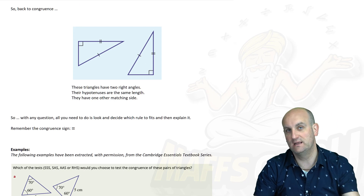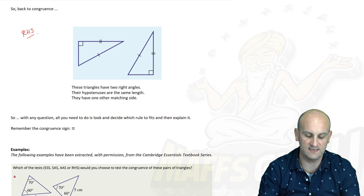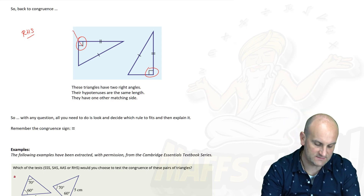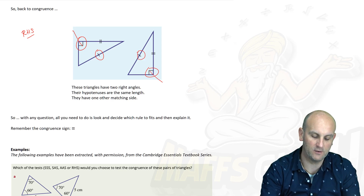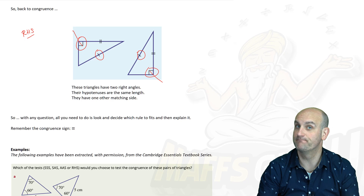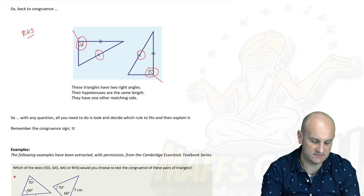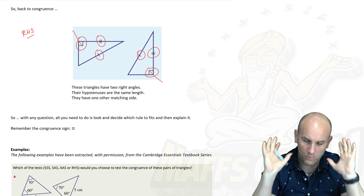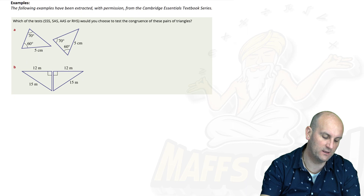Let's check these two triangles against the RHS rule. R — right angle: yes, they share a right angle. H — hypotenuse: there's my arrow pointing to the hypotenuse with a single mark on the first triangle, and a single mark on the second triangle — they are the same. S — one other side: there's a double line on both, confirming they are the same length. So these triangles are congruent by RHS.